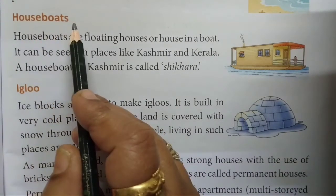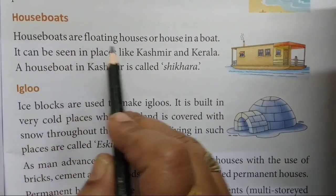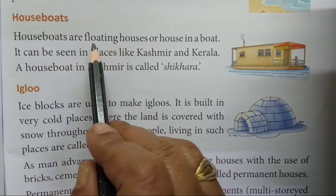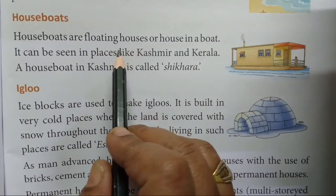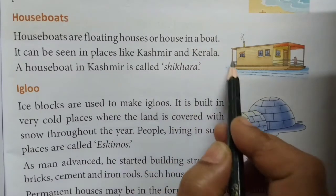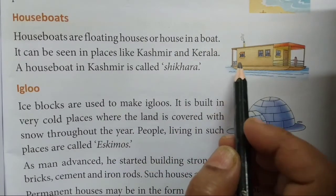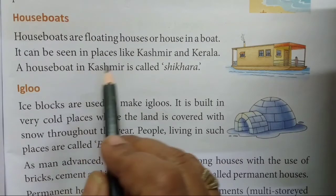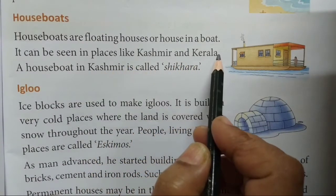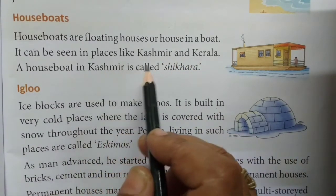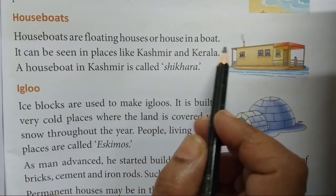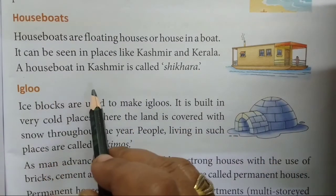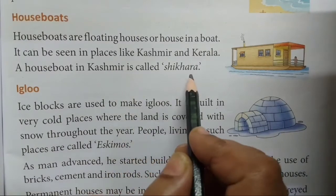Next is houseboats. Houseboats are floating houses — a house in a boat. Houseboats means तैरते हुए घर जो बोट पर बने होते हैं। It can be seen in places like Kashmir and Kerala — ऐसे घर कश्मीर और केरल में देखे जाते हैं। A houseboat in Kashmir is called Shikara — ऐसे houseboats को कश्मीर में शिकारा कहा जाता है।